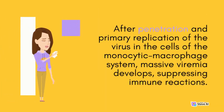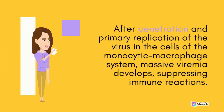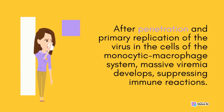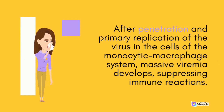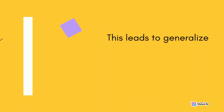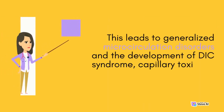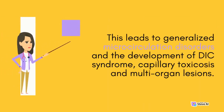After penetration and primary replication of the virus in the cells of the monocytic macrophage system, massive viremia develops, suppressing immune reactions. This leads to generalized microcirculation disorders and the development of DIC syndrome, capillary toxicosis, and multi-organ lesions.